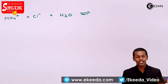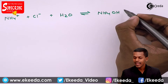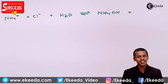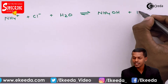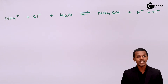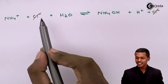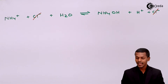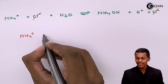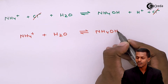The product formed is NH4OH, as discussed earlier, along with HCl in its ionic form — dissociating into H+ and Cl-. The equilibrium is maintained. We then cancel out the Cl- present on both sides, leaving the simplified equation: NH4+ reacts with water to produce the weak base NH4OH along with H+.